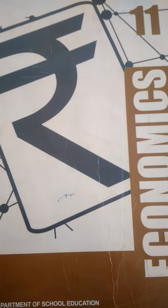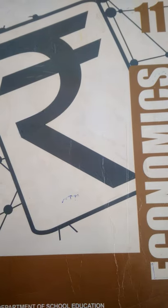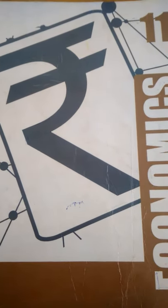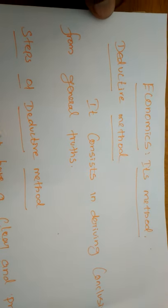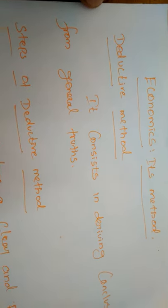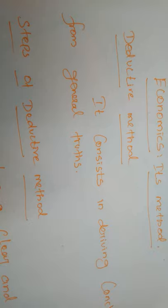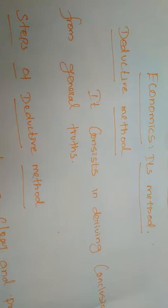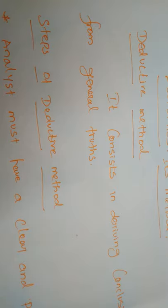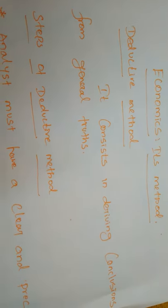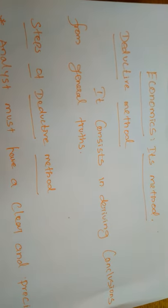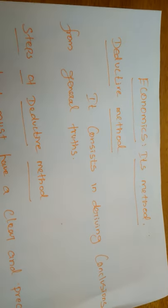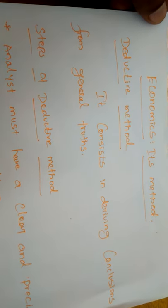For analyzing these laws and generalizations, in economics we use two types of methods: the deductive method and the inductive method. Last day we studied the deductive method. In this deductive method, it consists in deriving conclusions from general truths. If you want to derive any conclusions about economics laws or generalizations, you derive that conclusion from the general truth only.